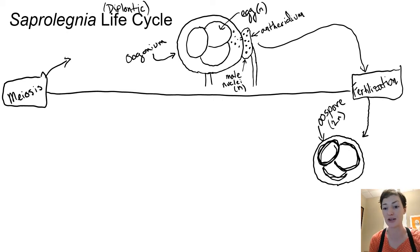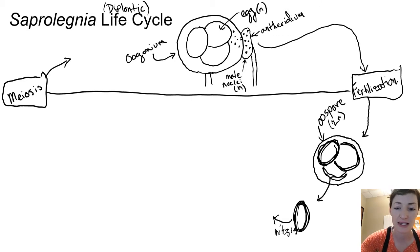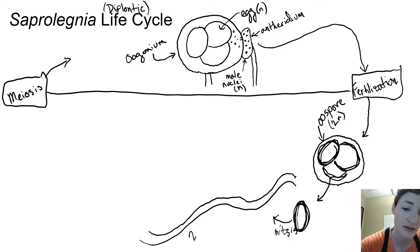These are now diploid and these are called oospores. This is essentially the same thing as a zygote - we have this thick walled spore that's going to germinate and grow. All spores are going to grow, right? So gametes fuse, spores grow. So our oospore is released, it's going to grow by mitosis, and then it will grow into this senocytic diploid thallus.